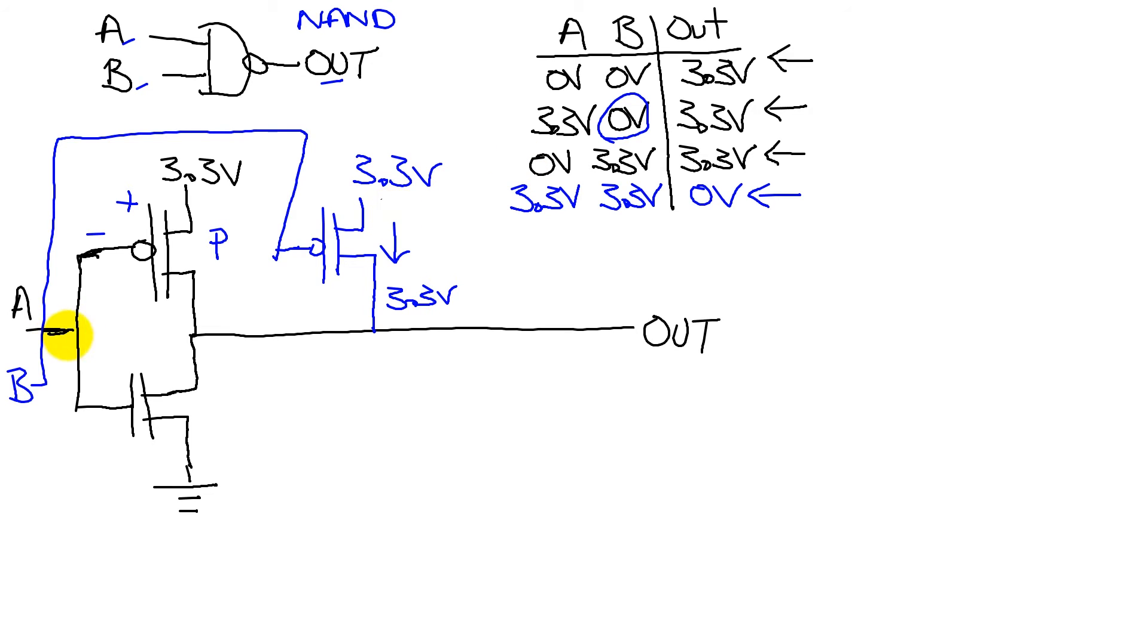We see here that if A is low, then this one is on, and the output is 3.3 volts. If B is low, this one is on, and the output is 3.3 volts.